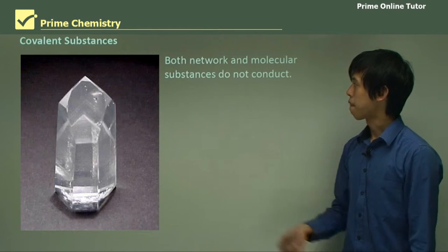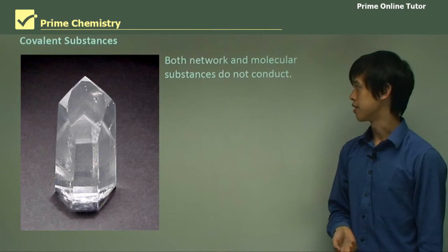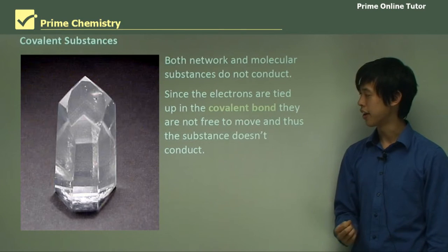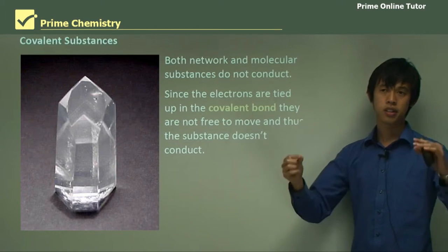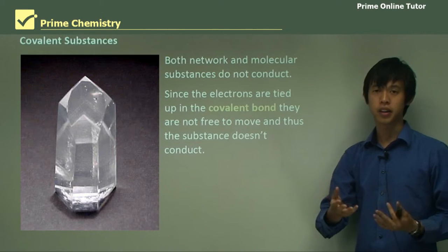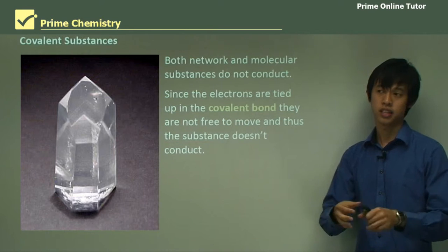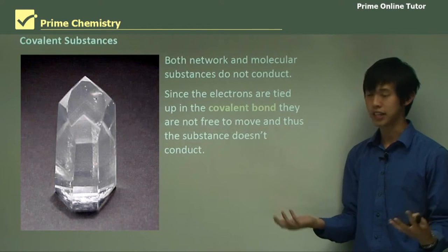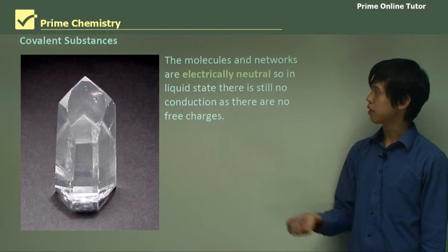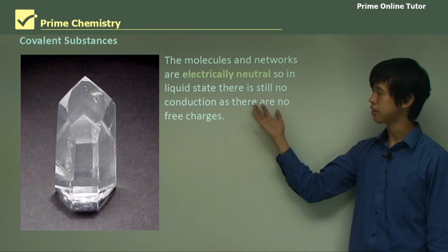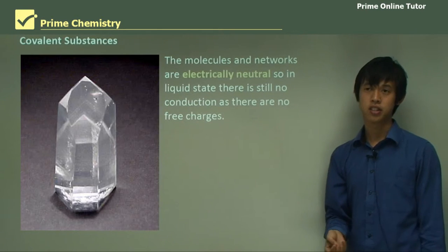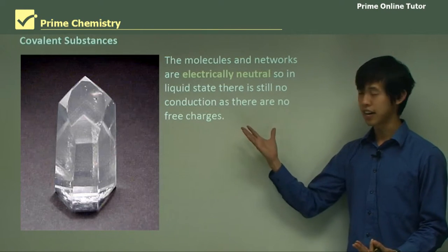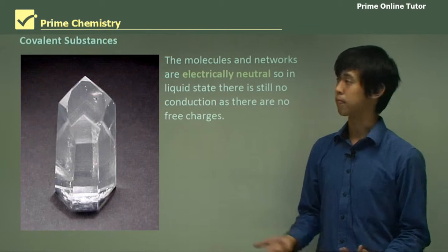Both covalent network and covalent molecular substances don't conduct electricity. Because the electrons are tied up in the covalent bond, they're not free to move. They're locked up in those covalent bonds and can't separate, and there are no ions because the electrons are shared, so everything is electrically neutral — there's no movement of charge at all. Even in the liquid state, there are no free charges, so there can be no electrical conductivity.